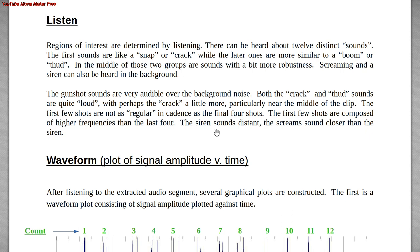The first thing you do when doing audio analysis is listen and find regions of interest. For this audio, I hear about 12 distinct sounds. I hear some snap sounds associated with the supersonic shock wave, and some boom or thud type sounds associated with the muzzle blast. Smack dab in the middle of those I can also hear a slightly different sound — it's not really a snap and not really a boom — and I'll explain that more later.